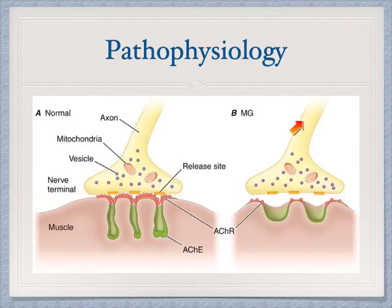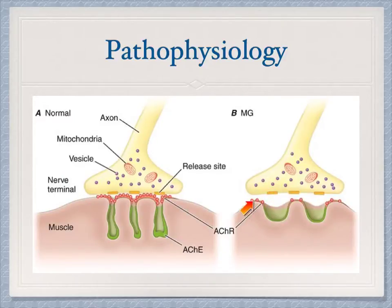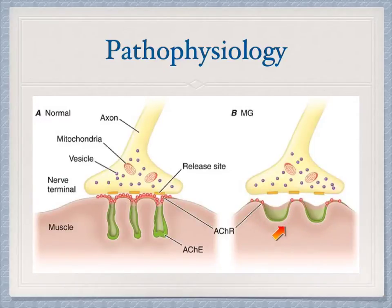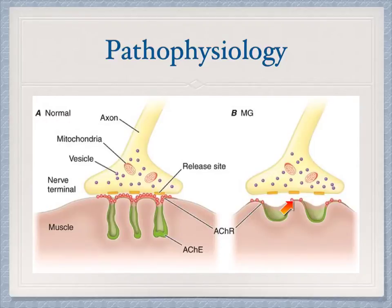However, in somebody with myasthenia gravis, we still have the same amount of vesicles and the neurotransmitter is released into the synaptic cleft. But we have a reduced number of receptors available to receive the neurotransmitter, and there is also a change in the anatomic structure of the postsynaptic cleft. This results in a decreased amount of neurotransmitter hitting receptor sites, causing decreased muscle contraction.